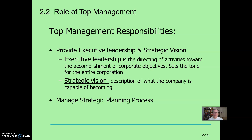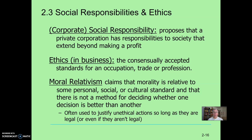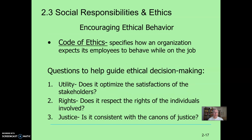The top management group includes executive leadership, and they set the strategic vision and manage the strategic planning process. We also covered corporate social responsibility and ethics, including the difficulty when people claim to be moral relativists and argue ethics don't apply to them. As a result, companies often set a code of ethics to specify how people should behave. To guide ethical decision-making, they often use a three-part framework: a utilitarian question — does it optimize the satisfactions of all stakeholders; do our actions respect the rights of the individuals involved; and is it consistent with the canons of justice and the laws of the country?